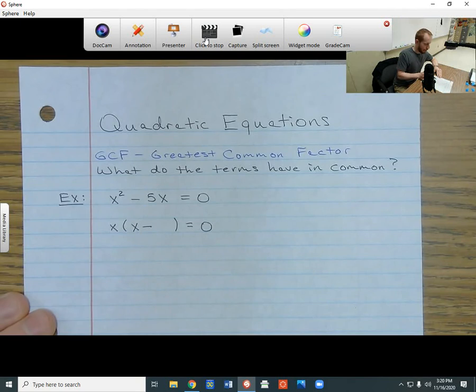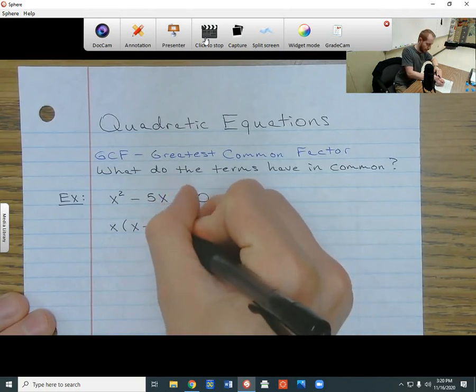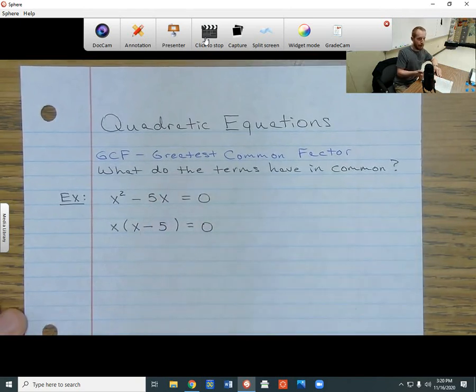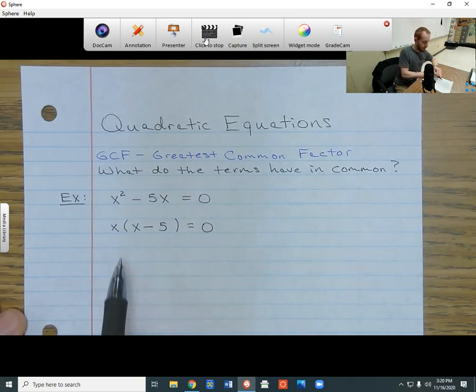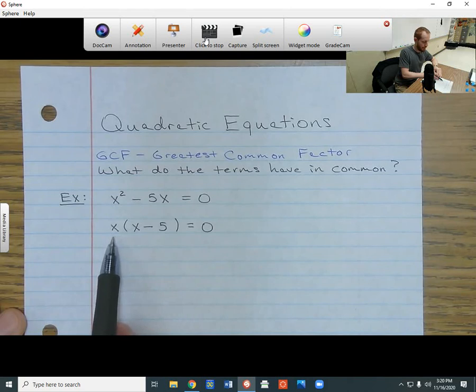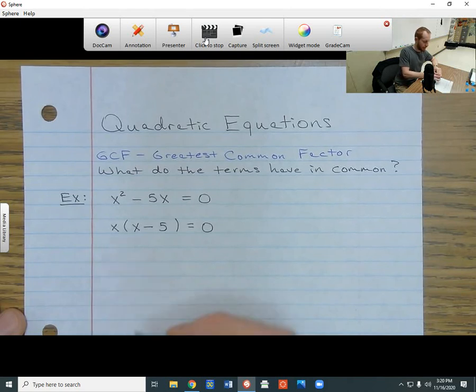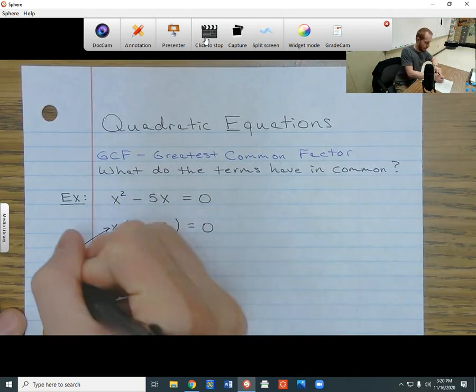And now, I'm trying to get back to 5x at this point. I've already taken out an x. I just need a 5 to go right here. And now, I'm done factoring. So now, this is composed of two factors. My first factor is going to be x. That's on the outside. That's called my GCF.